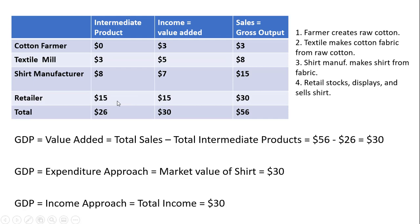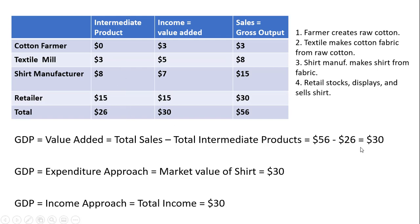For the retailer, it buys the shirt from the shirt manufacturer for $15 and sells it for $30. So $30 minus $15 gives the retailer's value-added of $15. The value-added approach calculates GDP as total sales — what the BEA calls gross output — minus the total value of all intermediate products. Summing the sales column: $30 + $15 + $8 + $3 = $56 in total sales, minus the total intermediate products of $26, giving us GDP of $30.